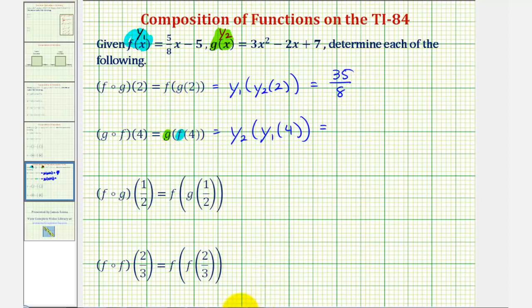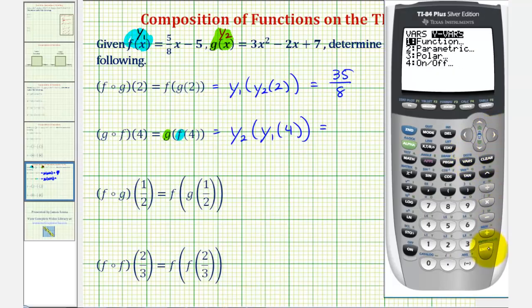So going back to the calculator, vars, right arrow, enter. Y sub two, so arrow down once, enter. Open parenthesis. Vars, right arrow, enter. Y sub one, enter. Open parenthesis. The input of four. Close parenthesis. Close parenthesis. And enter.